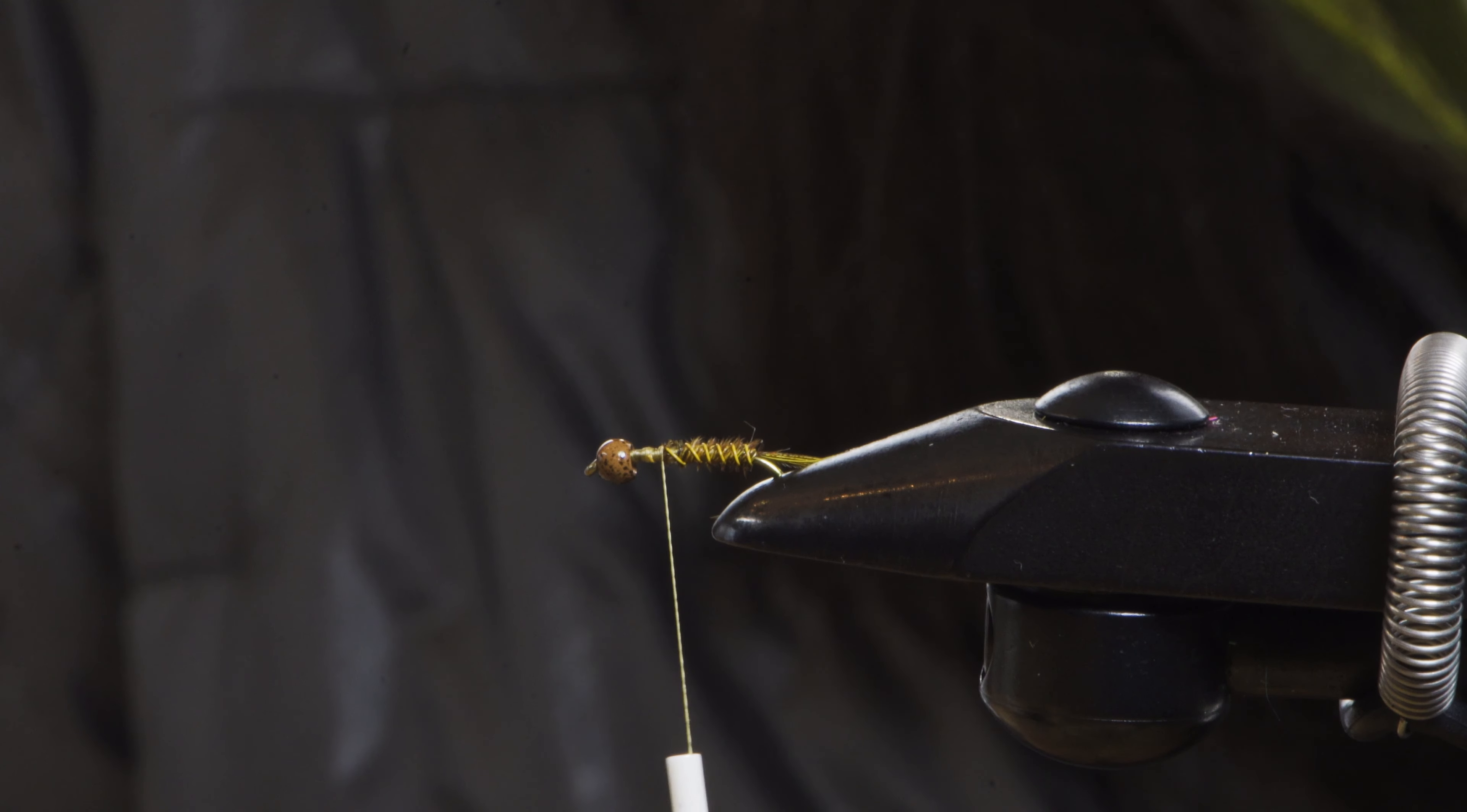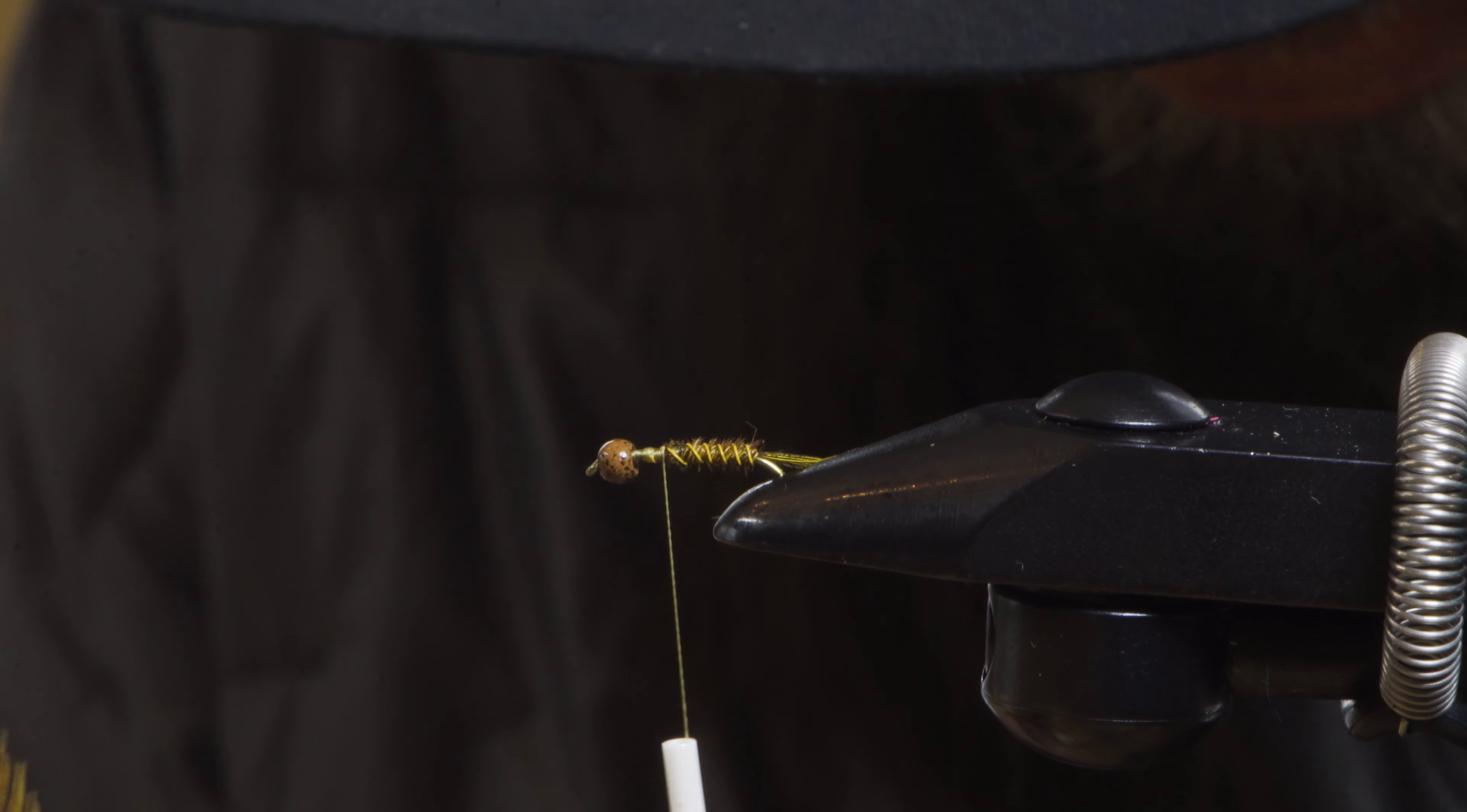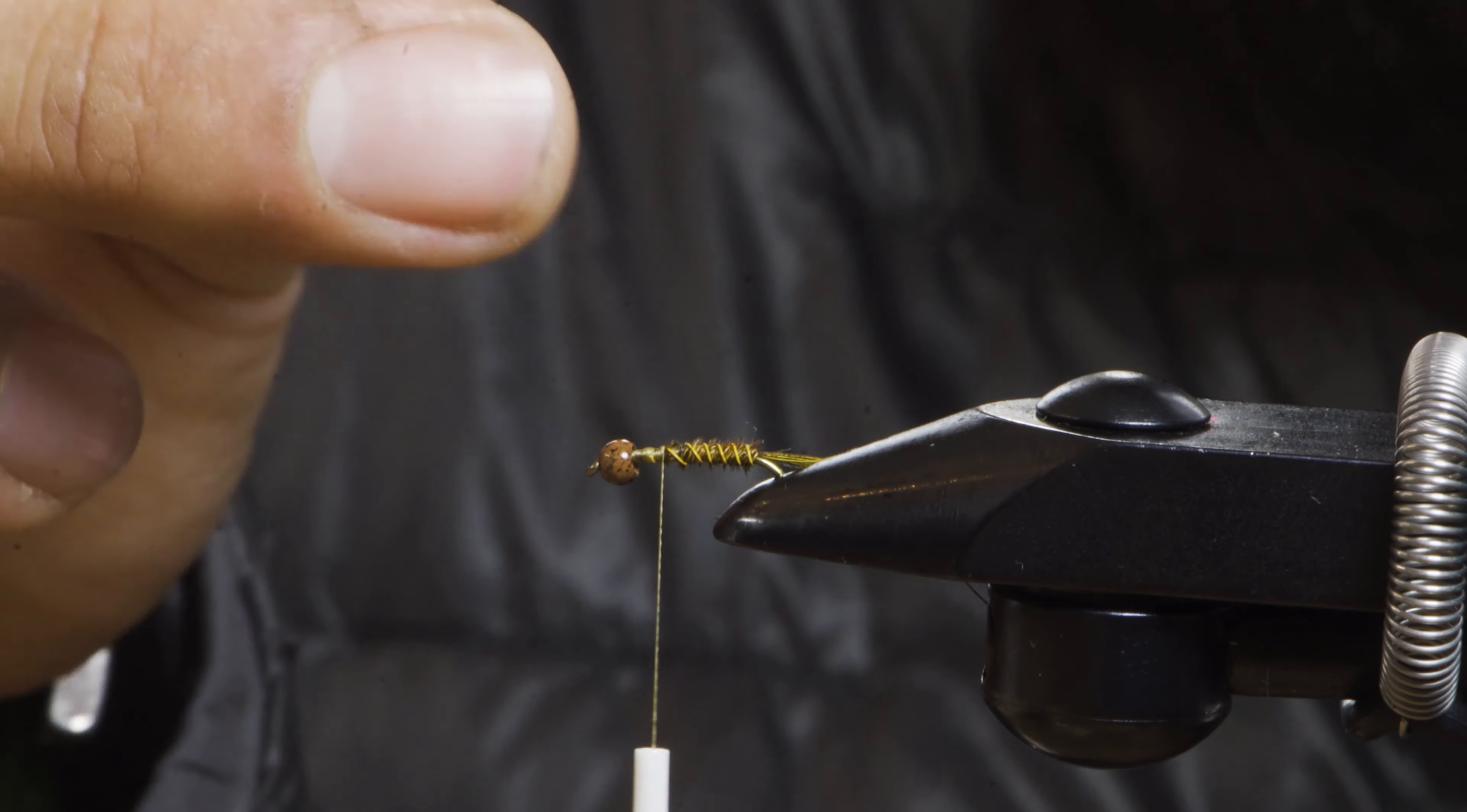Now you can use your old clump of pheasant tails if you still have enough. For the ease of this fly I'm going to take a fresh batch of fibers. I usually take about, for a fly this size, eight to ten. You want an even number so you can divide it evenly on either side of your fly.